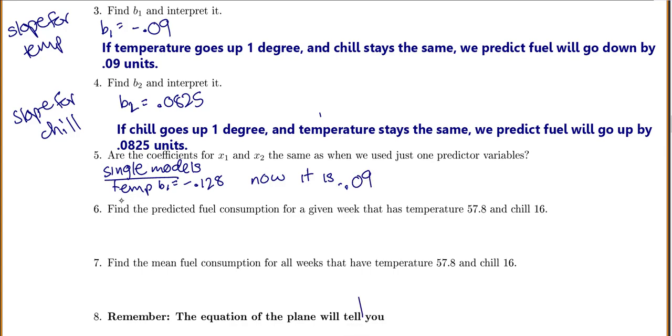And for our chill, that one was before 0.184. And now, it is 0.0825. So it did change quite a bit when we added in the two variables.